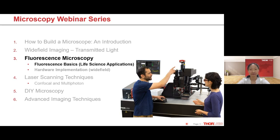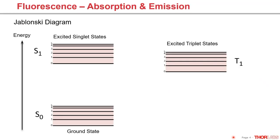Let's start today's talk with the basics of fluorescence. Fluorescence is a phenomenon describing the absorption and emission of light by a substance. It's nicely illustrated by the Jablonski diagram, which I'm showing here in a simplified version. There are three energy states — as the physical location goes up, energy level goes up. The lowest energy level is called the ground state. The excited singlet states are higher energy states, and the excited triplet states sit between the singlet and ground state in energy level.